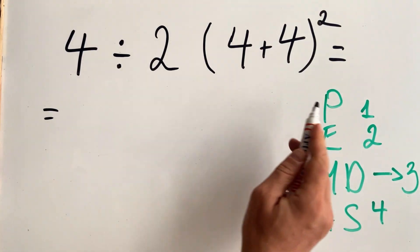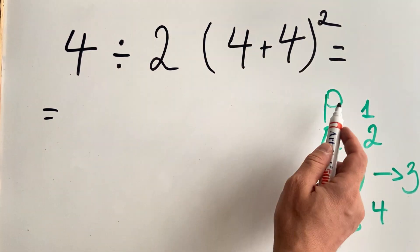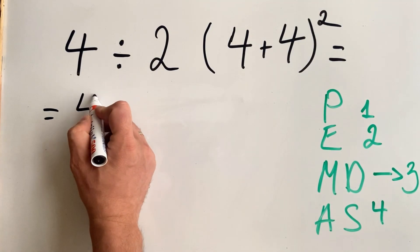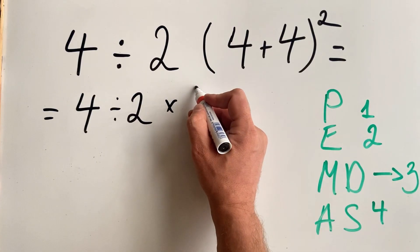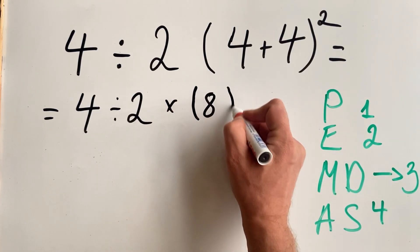So first, as we see here, we do what's inside the parenthesis. So we get 4 divided by 2 multiplied by 8 squared.